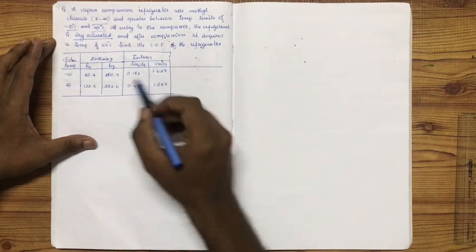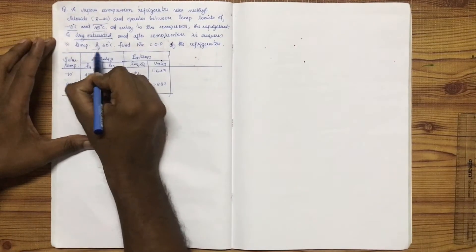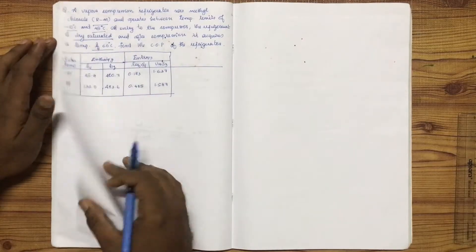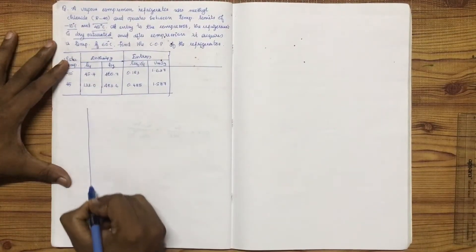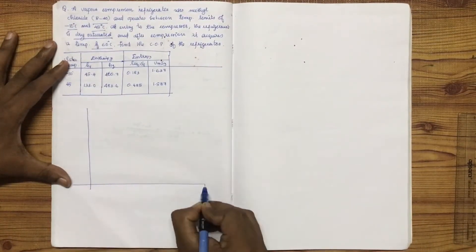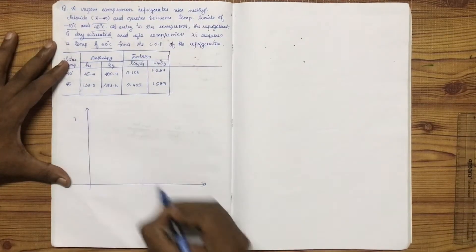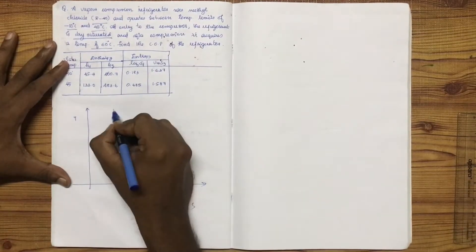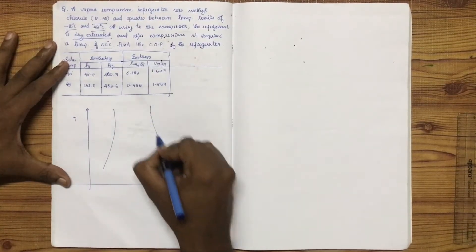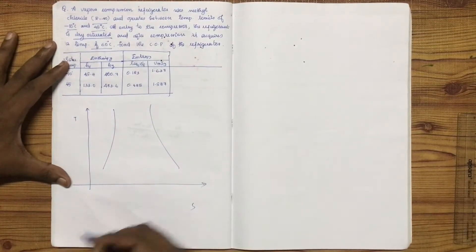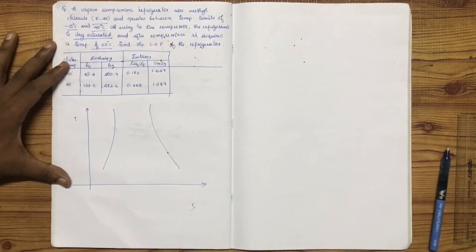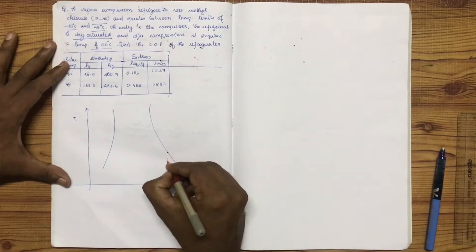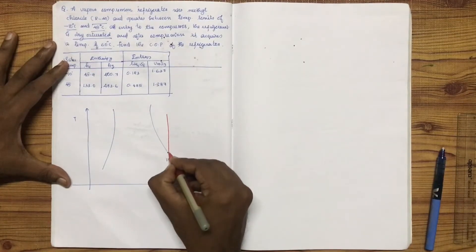After the compressor, it acquires a temperature of 60 degrees Celsius. If you go to the T-S diagram, you place the key points on the T-S diagram. First, we identify the discrete frequency points and place them on the diagram.